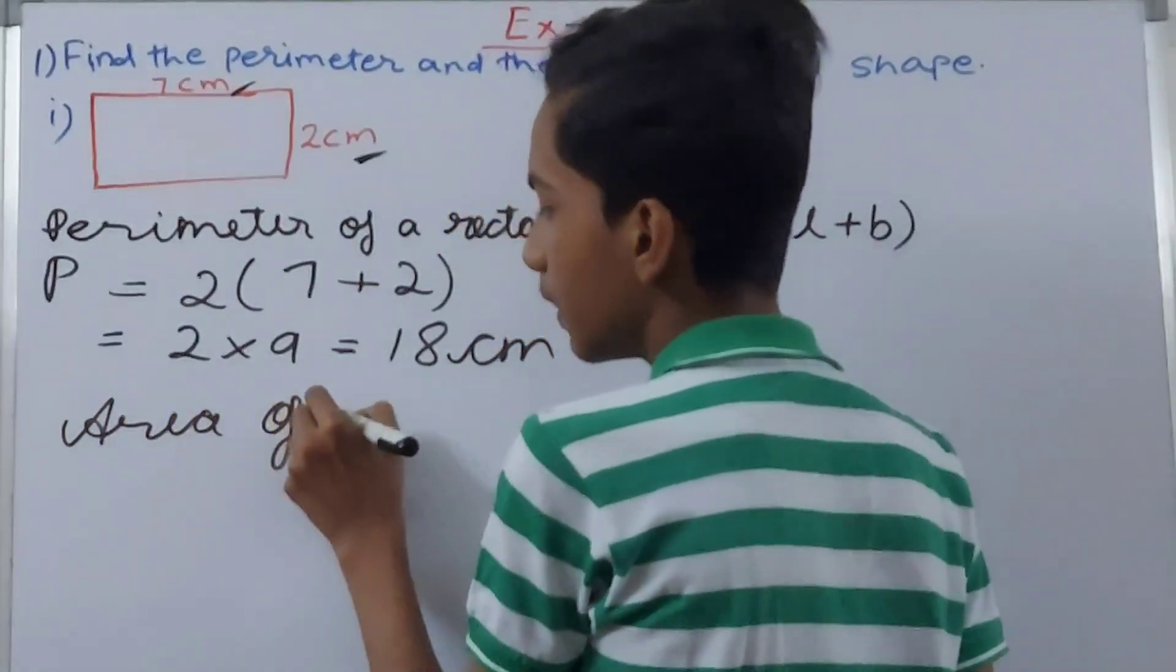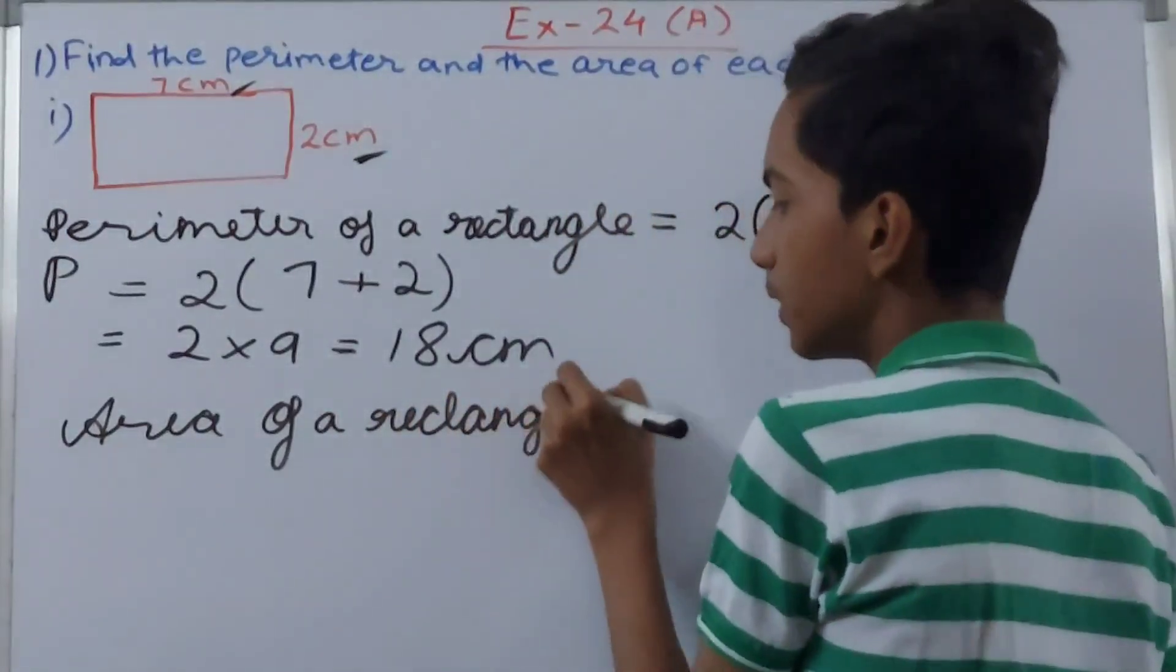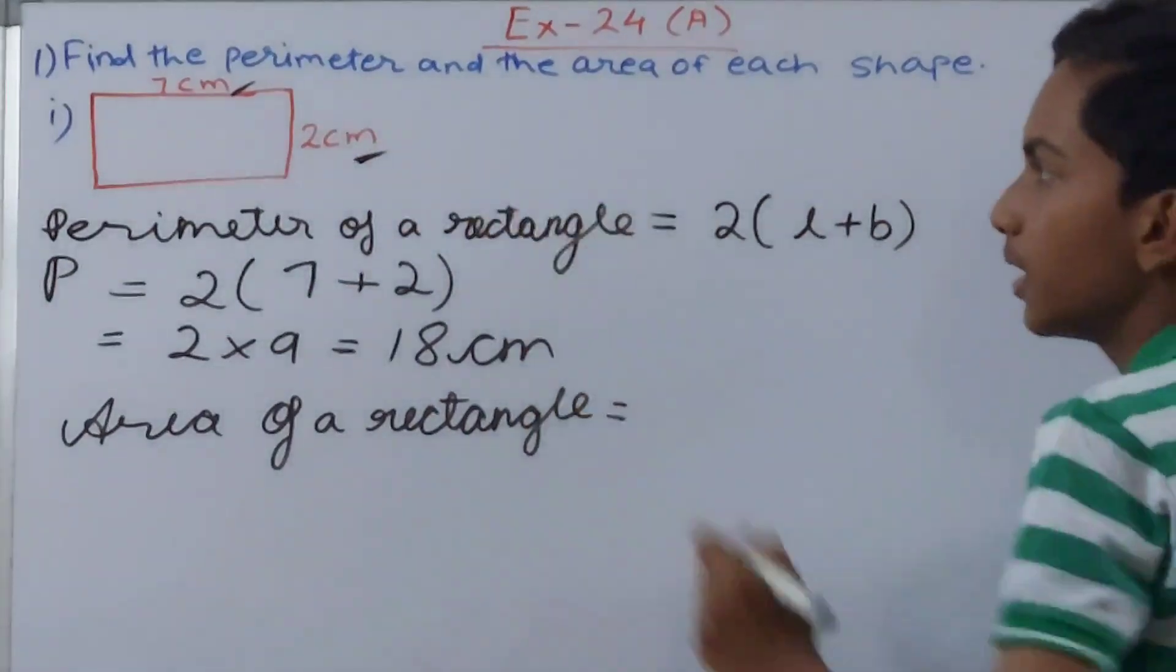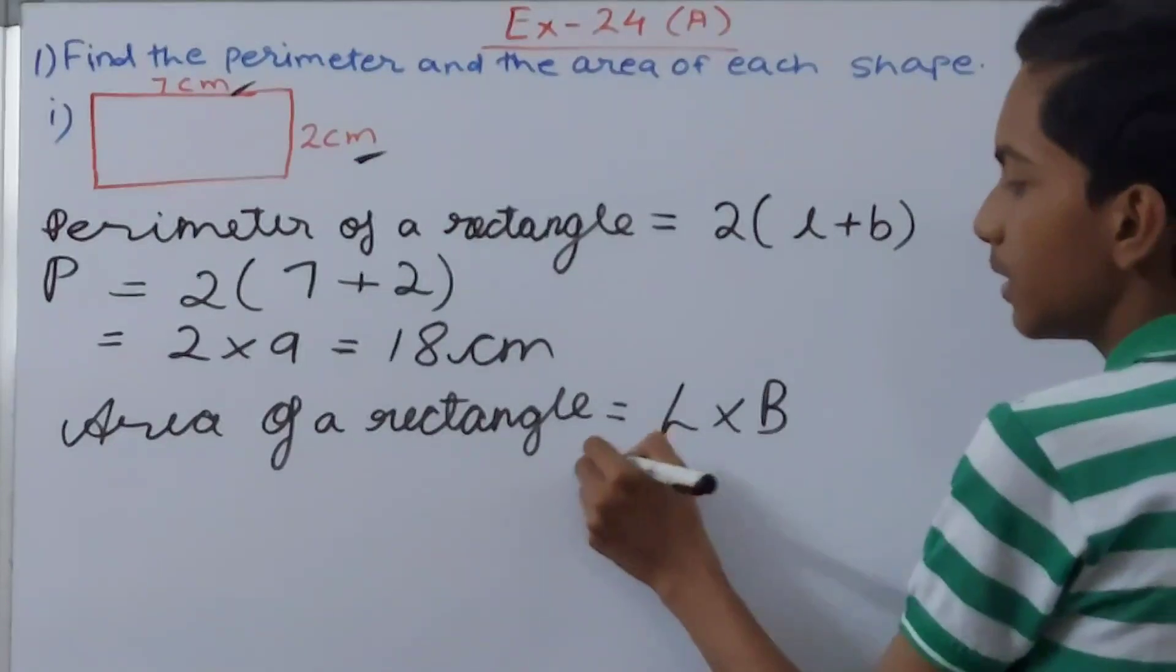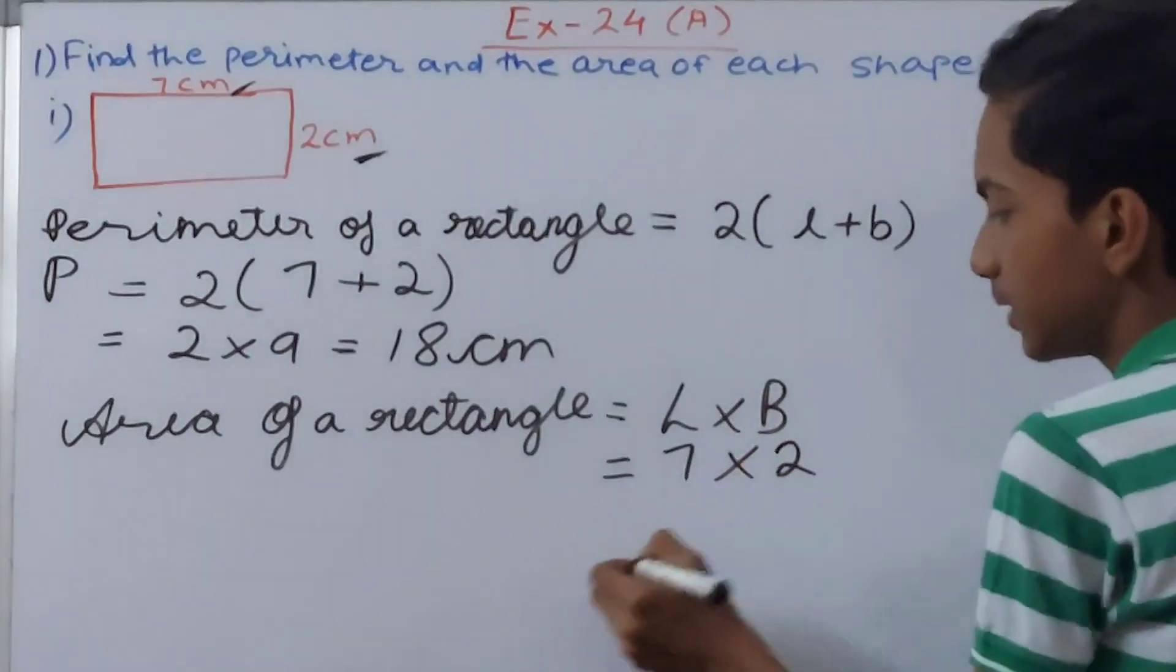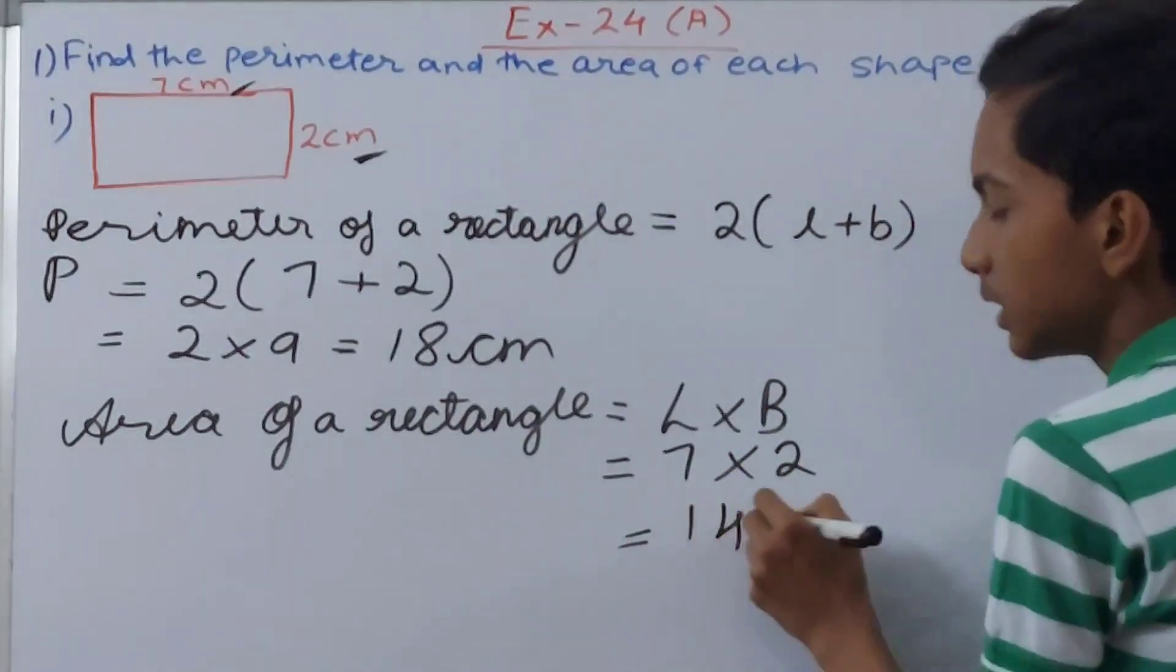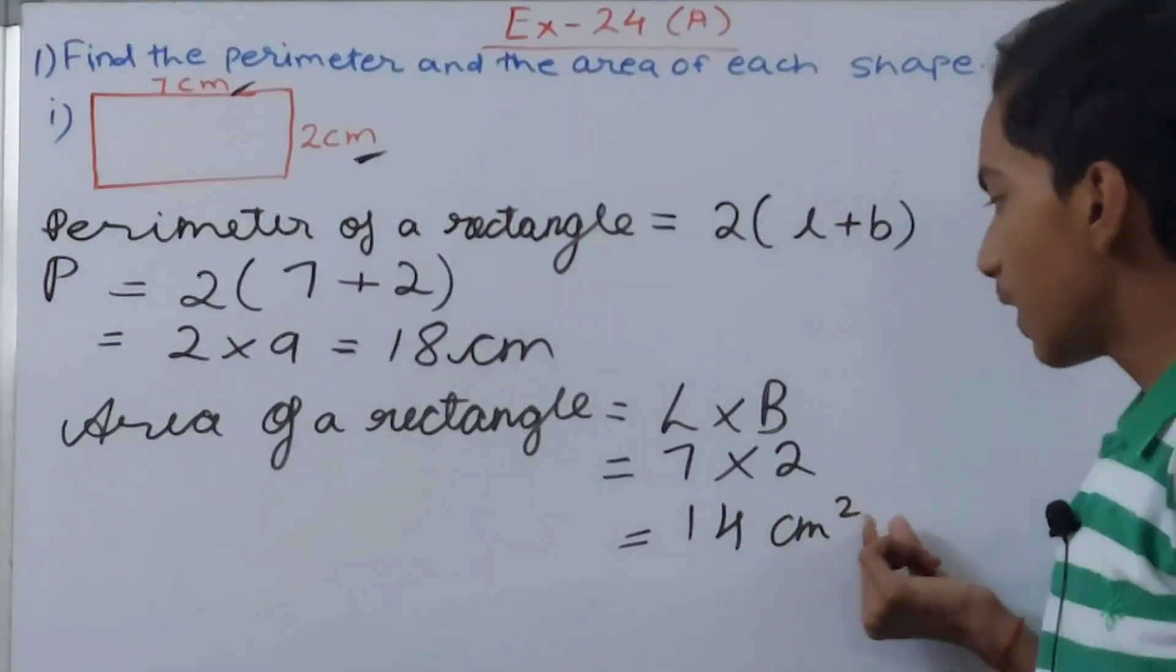Now the area. Area of a rectangle, let's see what will this be. Area of a rectangle is going to be 7 times 2, that is simply length times breadth. So length times breadth, 7 times 2, and that becomes 14 square centimeter.